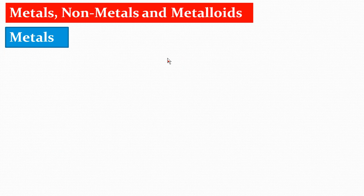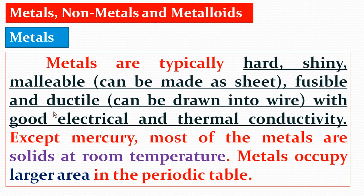Now the next topic: Metals, Non-metals and Metalloids. Metals are typically hard, shining, malleable — meaning they can be formed into sheets — fusible, and ductile — meaning they can be drawn into thin wires — with good electrical and thermal conductivity. Except mercury, most metals are solids at room temperature. Mercury, with symbol Hg, is a liquid. Metals occupy the larger area in the periodic table.